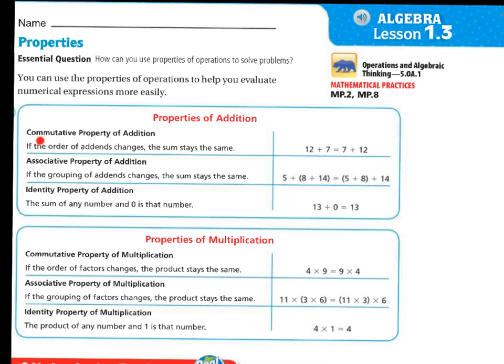Properties of addition. You have the commutative property of addition. If the order of addends change, the sum stays the same. So 12 plus 7 is the same thing as 7 plus 12. The addends switch but you still get the same answer.